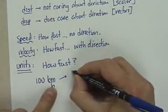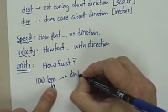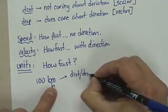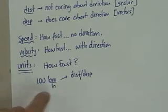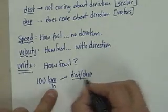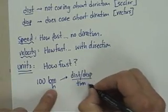So your kilometers is going to be your distance slash displacement, depending on what we're talking about, direction or no direction, and your hours is the time frame.